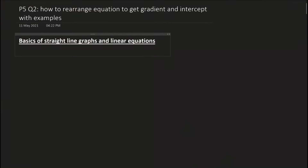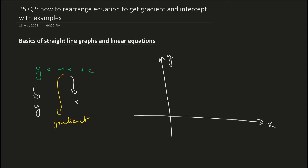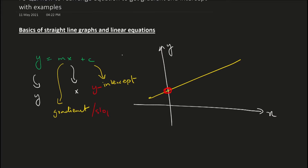The first thing you need to do is understand the basics of straight line equations and straight line graphs. If you plot a graph of a quantity y against x, then the straight line equation will be y = mx + c. This part is plotted on the y-axis, this part is plotted on the x-axis, and what's multiplied by x is your gradient of the straight line. This then is your y-intercept — the point where the graph crosses the y-axis.